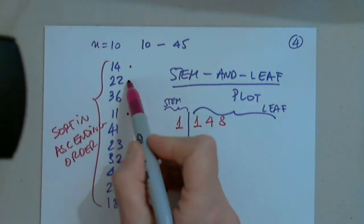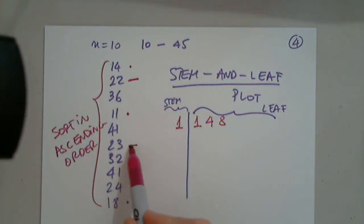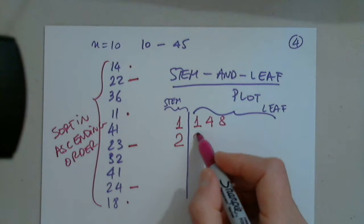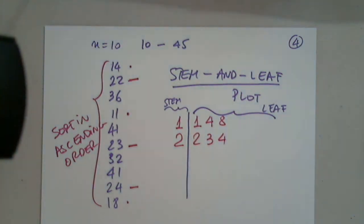Now I see a stem for 2. I will put the stem of 2. And I'll continue in that order. 2, 3, and 4. 2, 3, and 4. How do I read the information? 22, 23, 24.